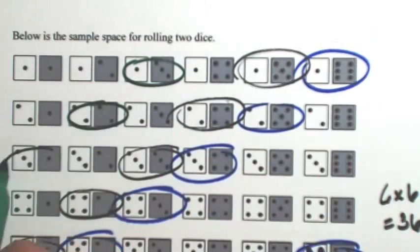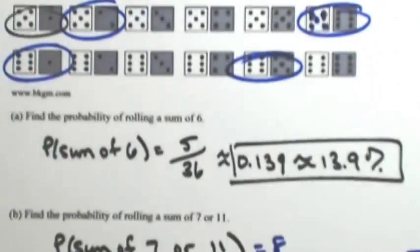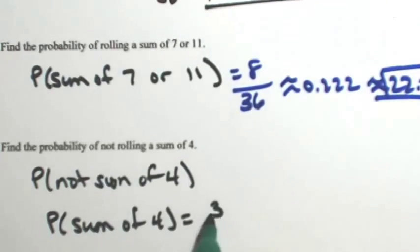So let's look through. The sum of four starting in the first row is one and three, and then two and two, and then a three and a one. So there's one, two, three ways to get a four out of 36.